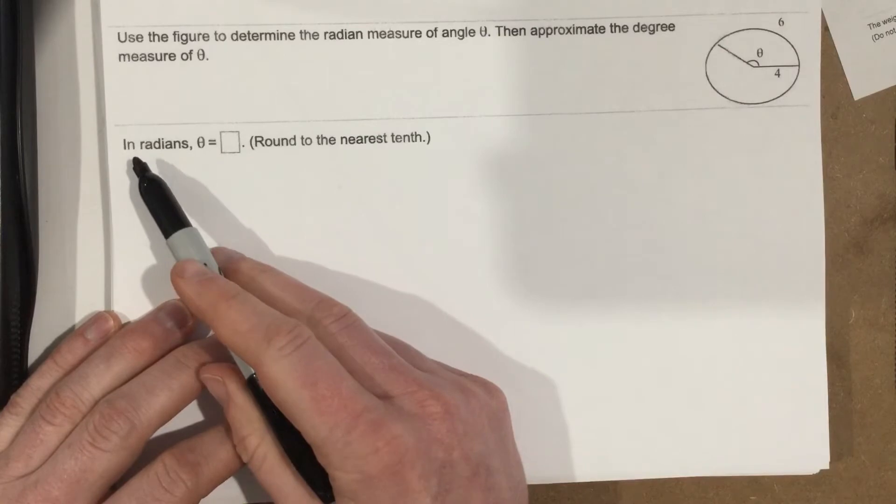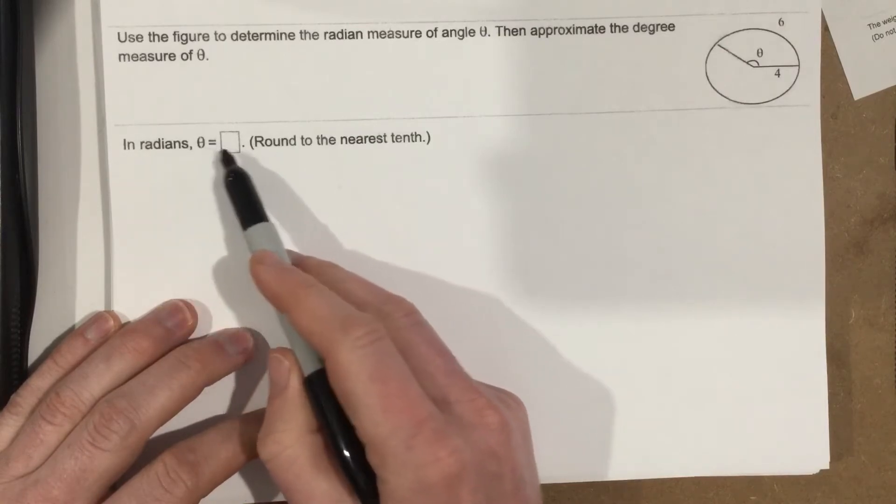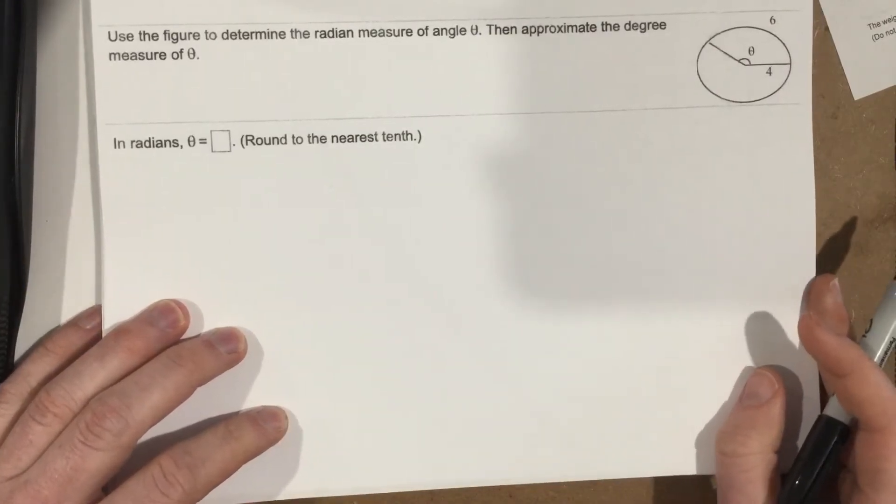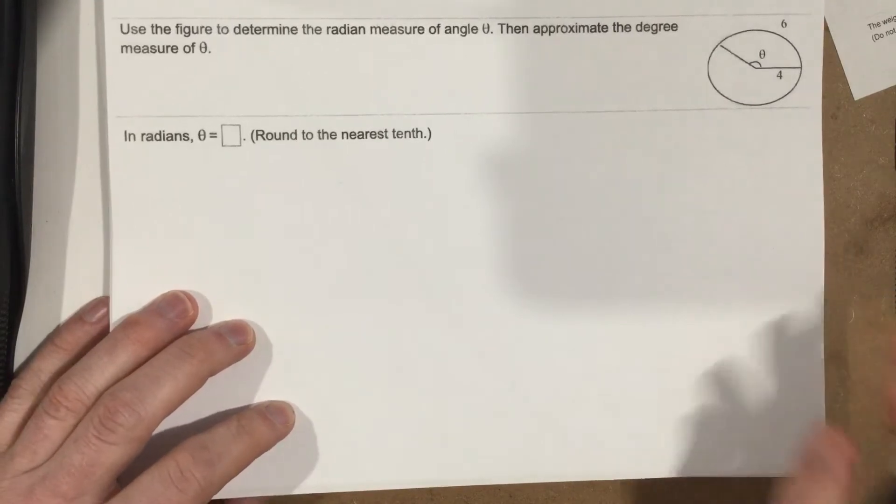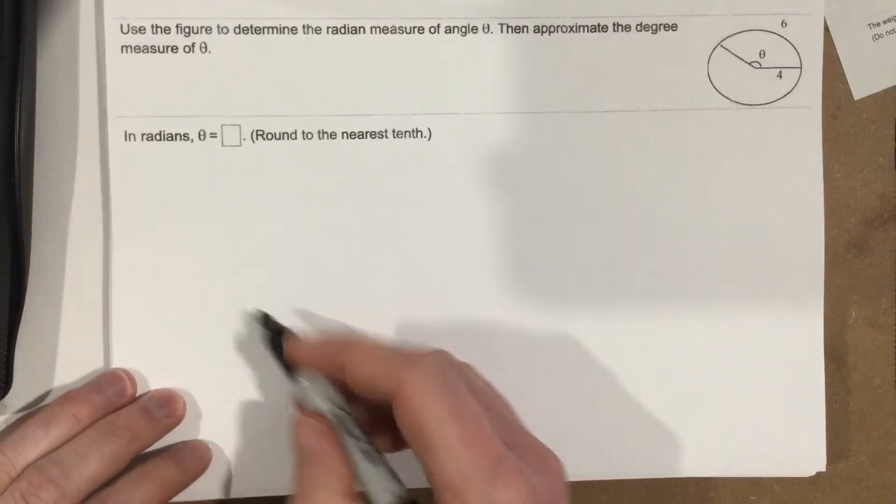They're talking about radians, so it says in radians theta equals blank. Well, first of all, does anybody even know what a radian is? I want to break this down as easy as possible, so let's talk about what a radian is.